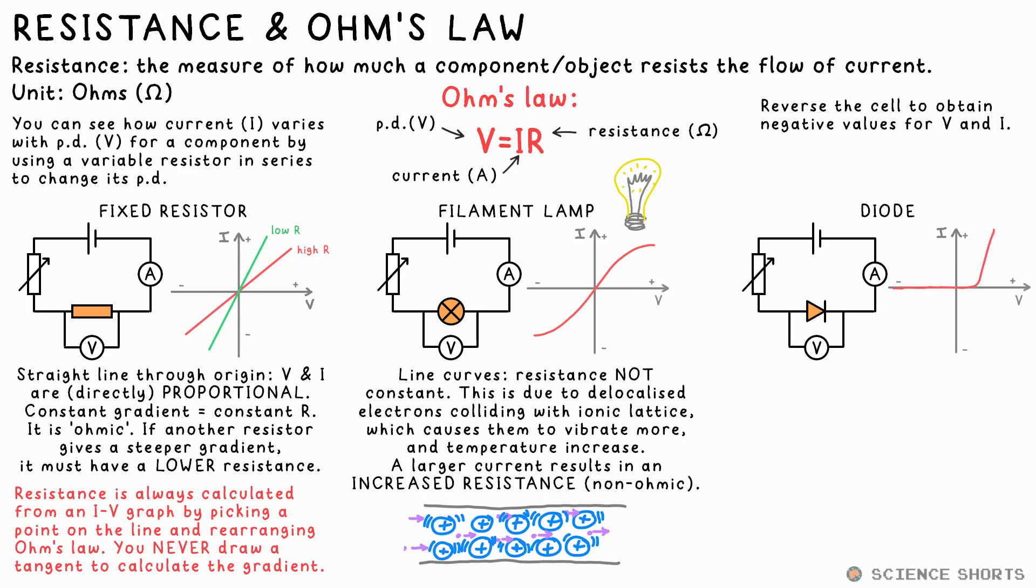Now, there is another component called a diode. It will give you this graph. The circuit symbol might give you a clue as to why this is. A diode only lets current flow in one direction. We say that in one direction, the resistance is very high, and it's very low in the other, which is why the current suddenly increases at around one volt.